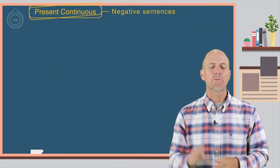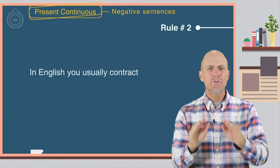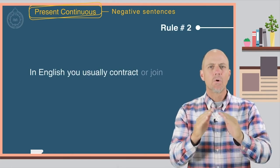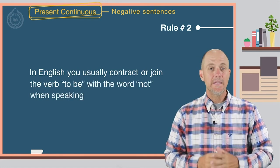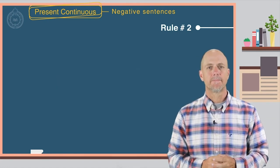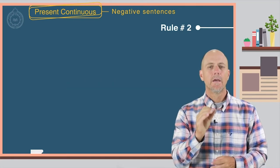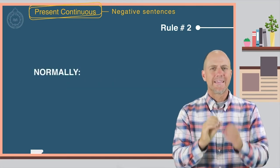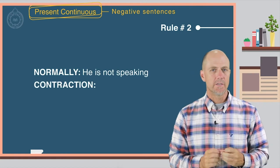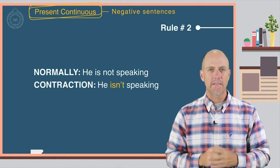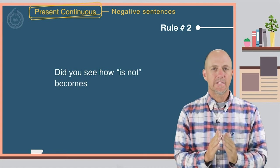In English, you usually contract or join the verb to be with the word not when speaking. Here are some examples. Normally: He is not speaking. Contraction: He isn't speaking. Did you see how is not becomes isn't?